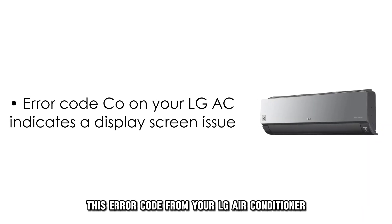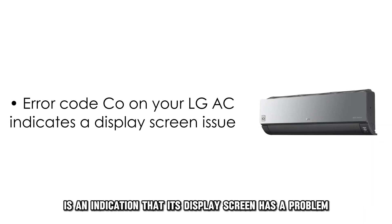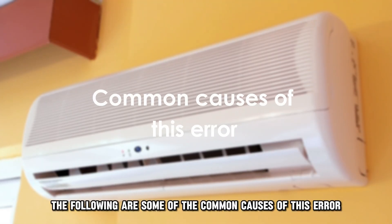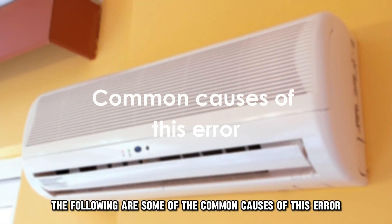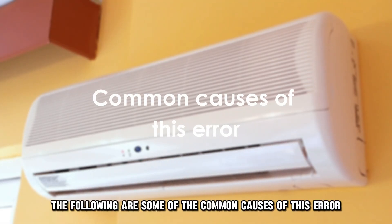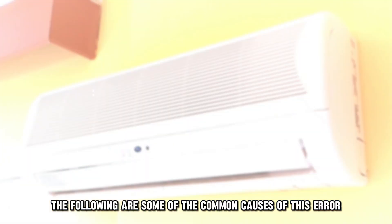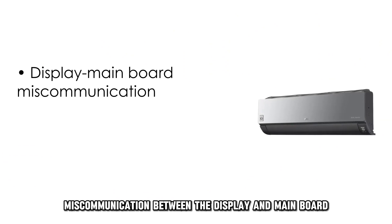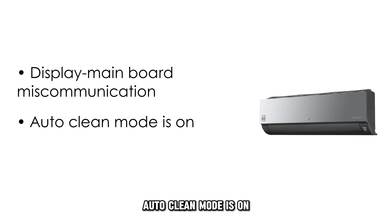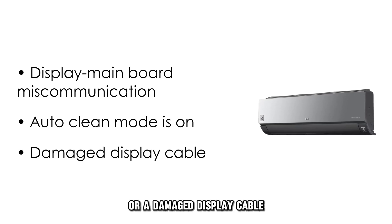Error code CO from your LG air conditioner is an indication that its display screen has a problem. The following are some of the common causes of this error: miscommunication between the display and main board, auto-clean mode is on, or a damaged display cable.